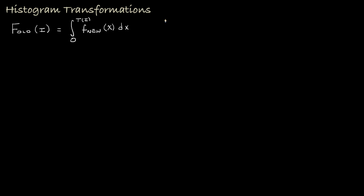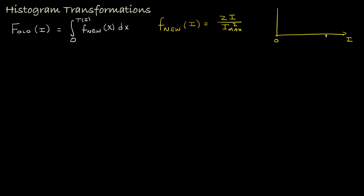So if we determine the cumulative frequency distribution for the original image, multiply that times the maximum intensity we'd like to see in our new image, and use that as our transformation, the transformed image will have a normalized histogram that's a constant. Now let's look at another example. Suppose we'd like the transformed image to have a normalized histogram that's linear — going from zero out to i_max and increasing linearly, with a value of 2 over i_max at i_max.